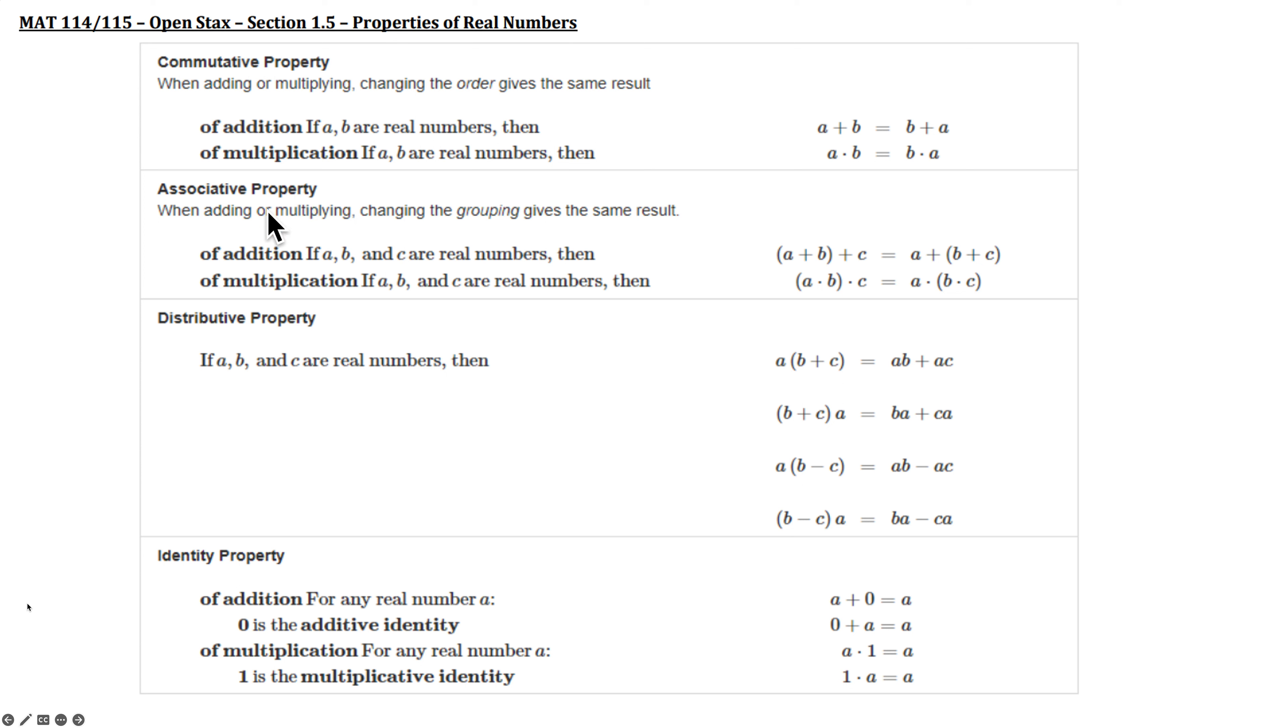The associative property of addition and the associative property of multiplication. Now what you're going to do is the physical order doesn't change, but you use grouping symbols to change which operations are done. And this will still give you the same result. So let's look at the associative property for addition. Physical appearance. A is first, B is second, C is third. But because you put parentheses around A and B, you have to add these two numbers first, then add the C. A is equal to A is first, B is second, C is third. But there's parentheses around B plus C, indicating you have to do B plus C, then add the A.